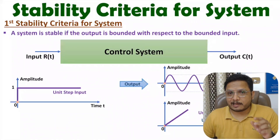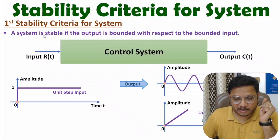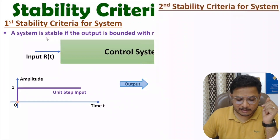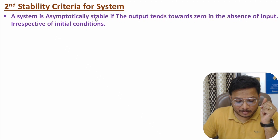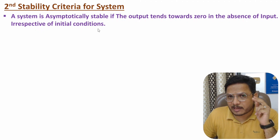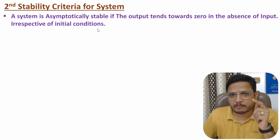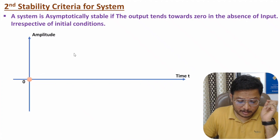So the first stability criteria states that if you have bounded output with respect to bounded input, then the system is stable. Now I will discuss the second stability criteria. The second stability criteria is based on an asymptotically stable system. A system is asymptotically stable if the output tends towards zero in the absence of input, irrespective of initial conditions. With an asymptotically stable system, the output goes towards zero when no input is applied.